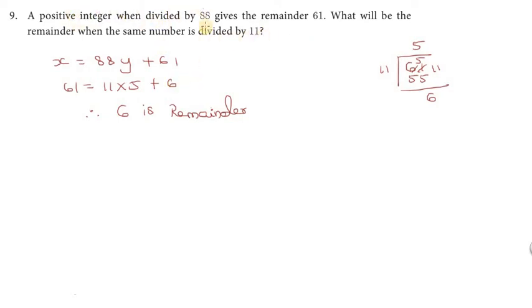So a positive integer - we can use the division algorithm. A is equal to bq plus r.